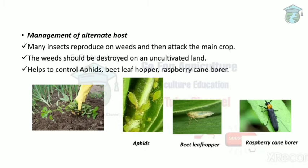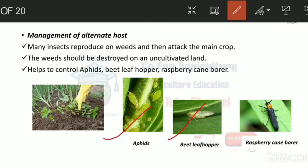Next is management of the alternate host. Alternate hosts here means weeds, because weeds are also a type of plant and can be hosts for pests. A pest needs a plant host to infect, and weeds qualify as plants. If we destroy weeds in uncultivated land, we can also control the pest — specifically, this helps control aphids, beet leaf hopper, and raspberry cane borer.